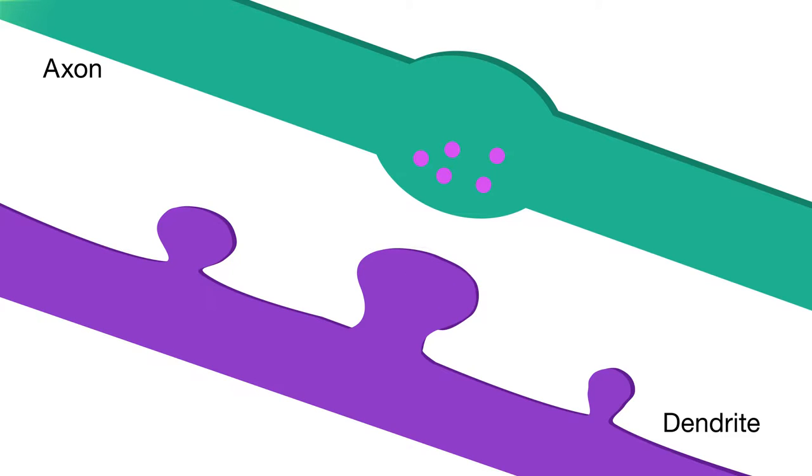Changes in spine size are one way memories are recorded. When lots of messages are being passed and a spine is very active, it gets bigger.